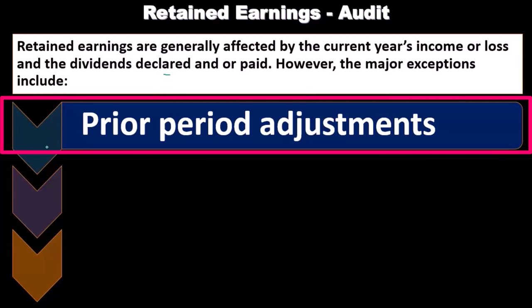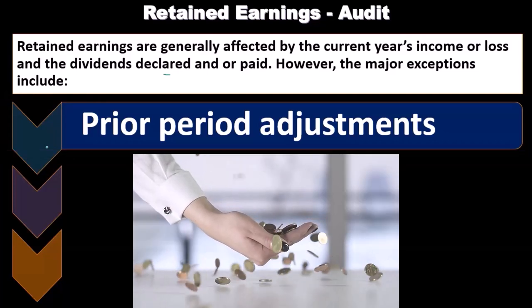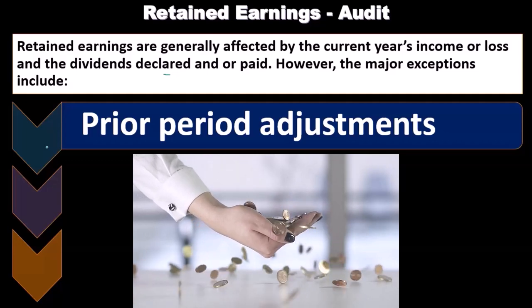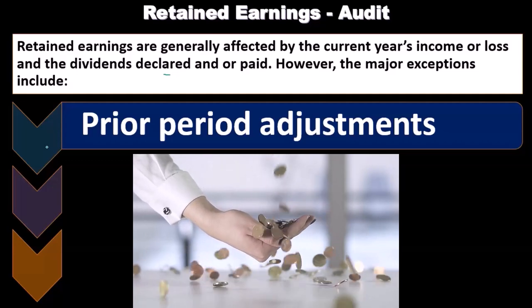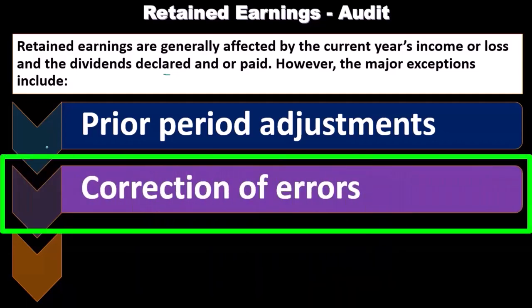We'll tie out and make sure the net income recorded and closed out in the books ties to the income statement — that's basically handled by the double-entry accounting system. However, other types of transactions could affect retained earnings. Prior period adjustments, for example: if there was an adjustment in the prior period made this year, that adjustment will roll into and affect retained earnings.